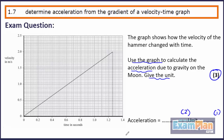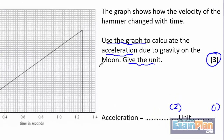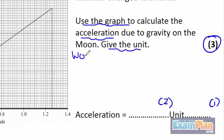However, if you mess up the calculation without showing the working, you could lose both of those two marks. So we will show our working. That way, we will only lose one mark if the calculation is incorrect.